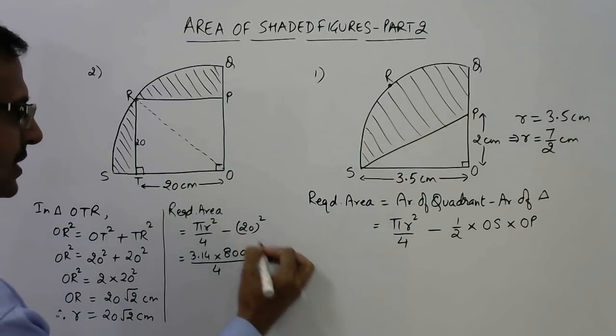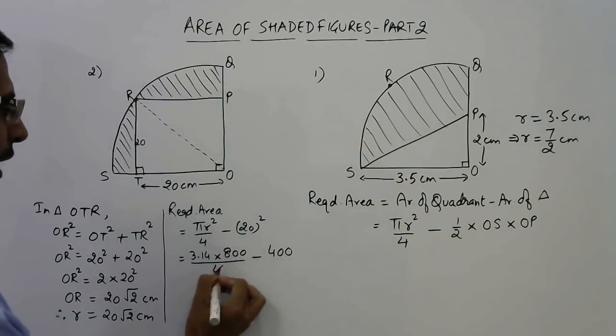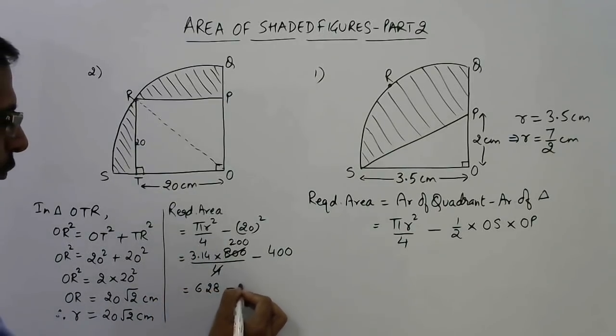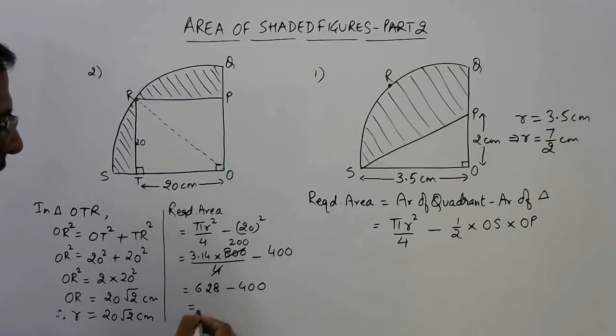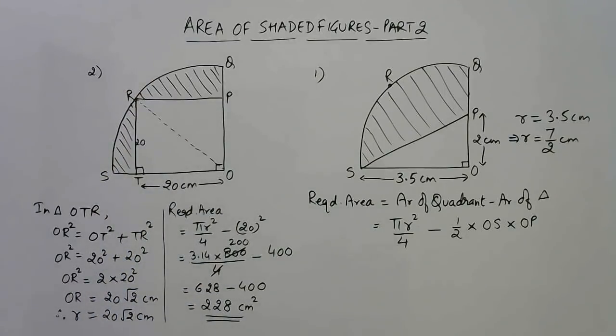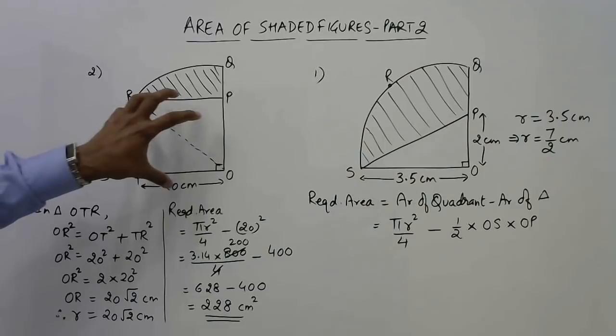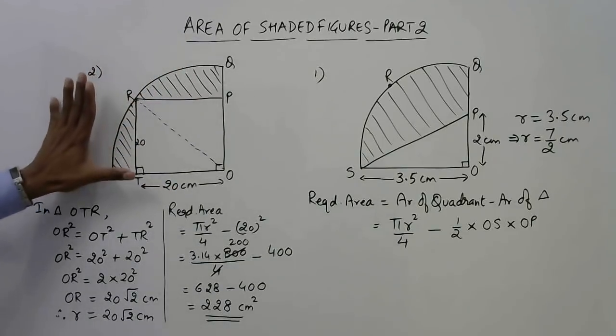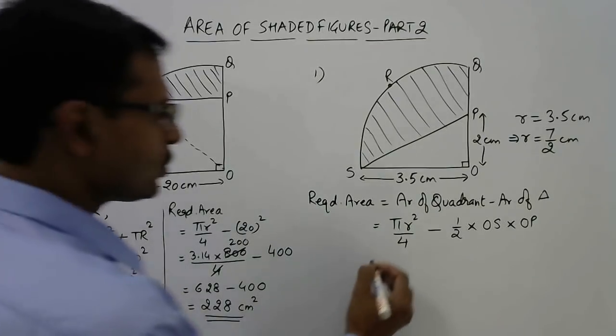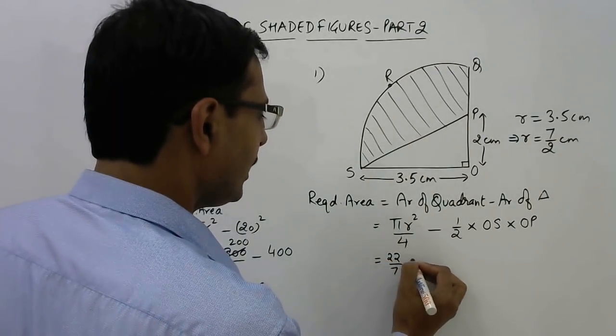So 4 cancels 200 times, and 3.14 into 100 is 314 into 2, that is 628, and 400 is to be subtracted from this. Here is your final answer for the question: 228 centimeter square is the required area. That is the area of the quadrant not included in the square, 228 centimeter square.